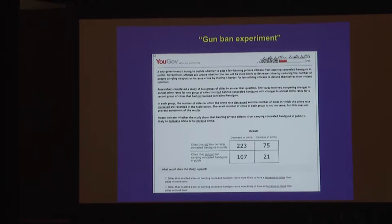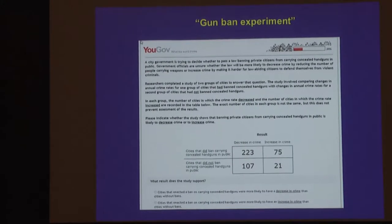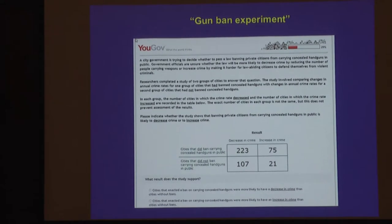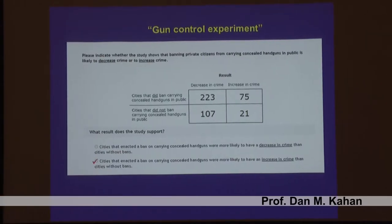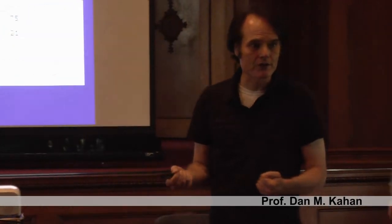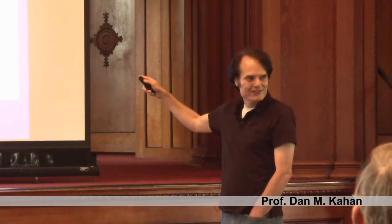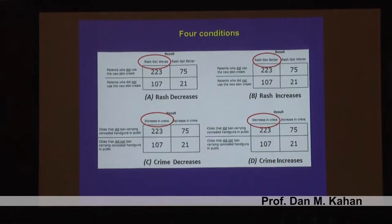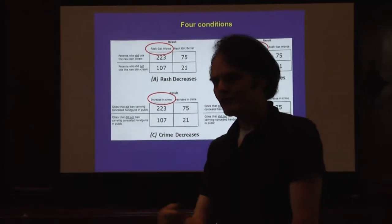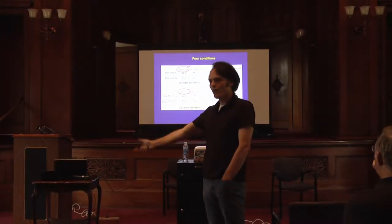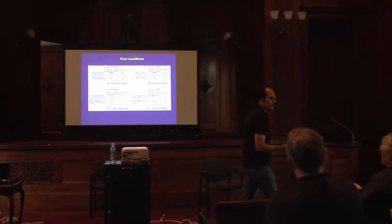But there's more to the study. There's another group we asked to assess the results of an experiment on gun control — the same numbers, but we told them that social scientists were comparing jurisdictions that banned carrying a concealed gun in public versus those that allowed it, to see whether crime was going up or down. We used exactly the same numbers, creating four conditions: skin cream and guns, with half the subjects seeing information suggesting the intervention worked, and half seeing information suggesting it didn't.